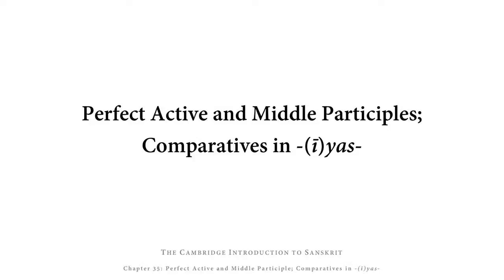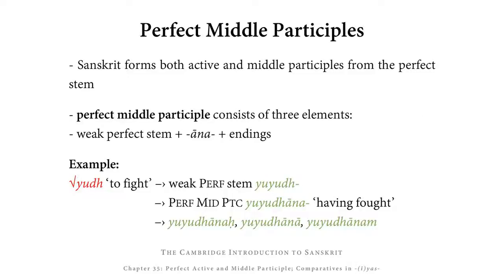Welcome to the video for Chapter 35 of the Cambridge Introduction to Sanskrit, which is going to tell you about perfect active and middle participles, and about comparatives in YAS and EYAS. Sanskrit forms both active and middle participles from perfect verbal stems. We're going to start by looking at the perfect middle participles, because that is formally simpler than its active counterpart.